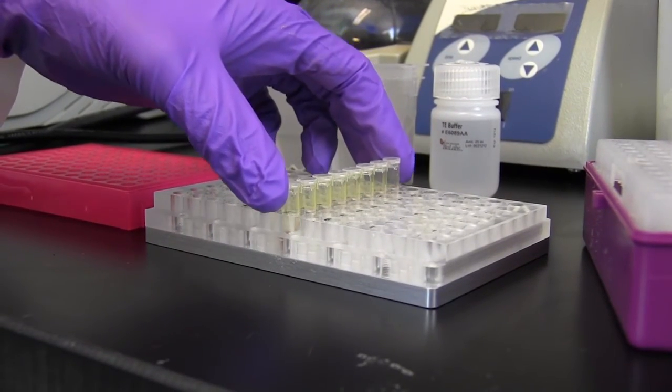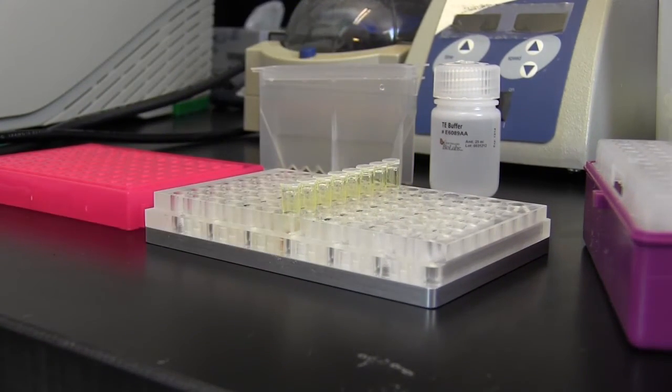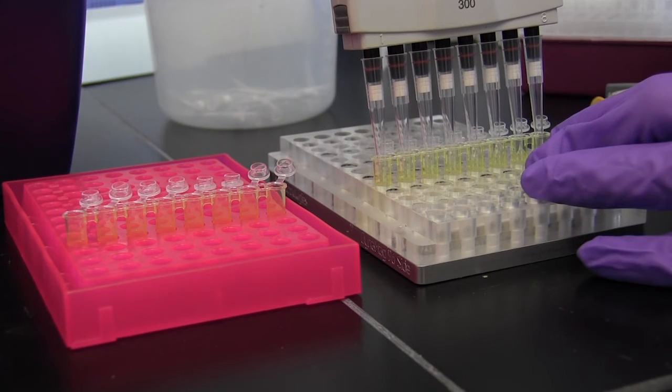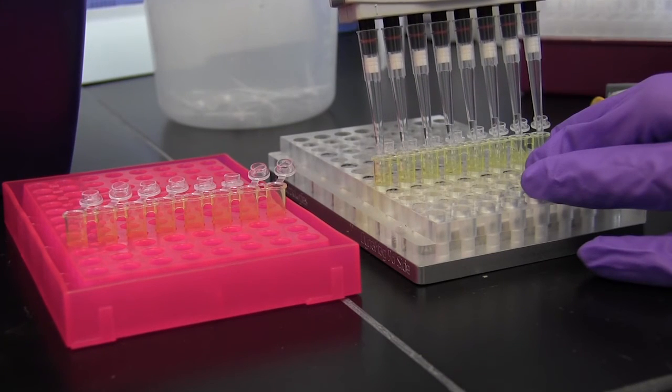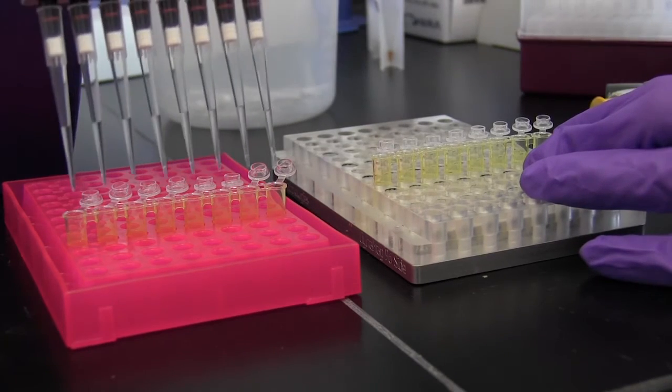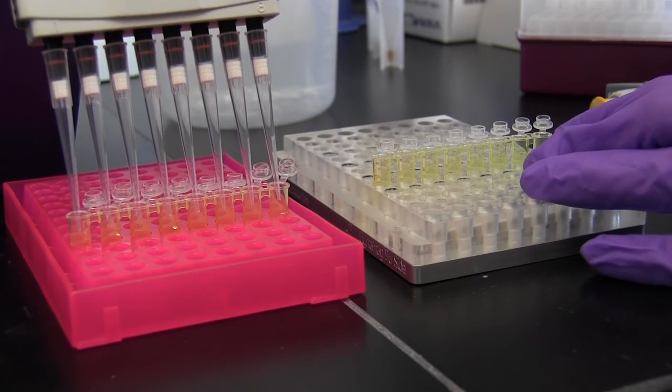Return the sample to the magnetic field until the sample clears, approximately 5 minutes, and remove 30 microliters of the supernatant containing the library to a new tube. This library can be stored at minus 20 degrees Celsius.